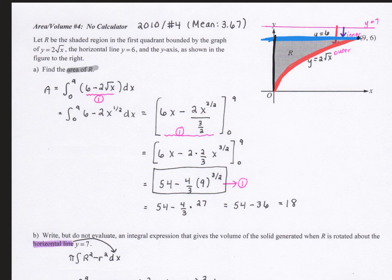I simplified this a little bit in the next step before I plugged my limits in. When I plug the 9 in, it's 54 minus 4 thirds times 9 to the 3 halves power. When I plug 0 in, that just gives me 0, so I didn't need to write anything. You can go ahead and evaluate this 3 halves power if you want to, or you can just leave it at this boxed answer right here.